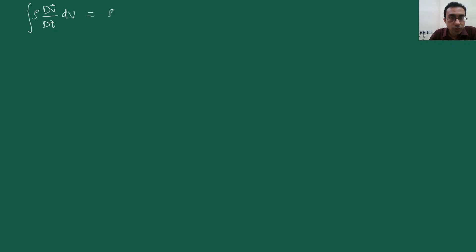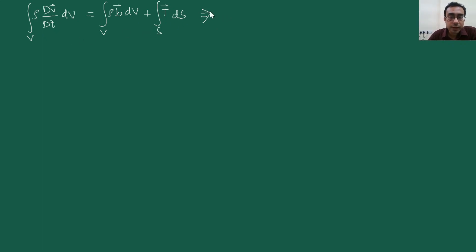What we have now is rho dv/dT. It is equal to rho b plus dds, the surface integration. And this can be rewritten by taking the volume integrals to one side. We take the rho common: dv/dT minus b vector dv, is equal to the surface integration of T vector ds.